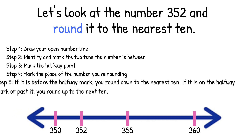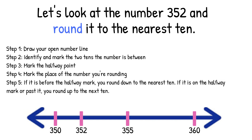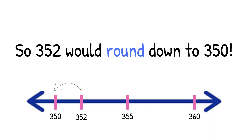Step 5: If it is before the halfway mark, you round down to the nearest 10. If it is on the halfway mark or past it, you round up to the next 10. So 352 would round down to 350.